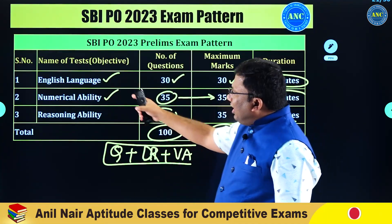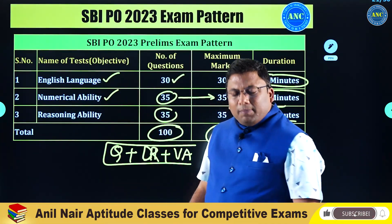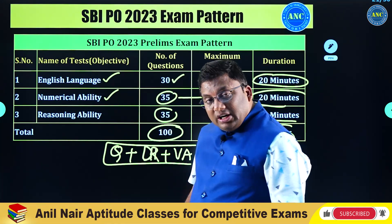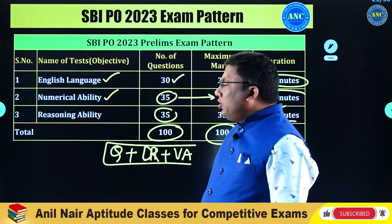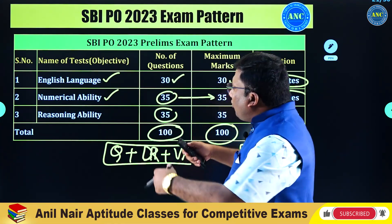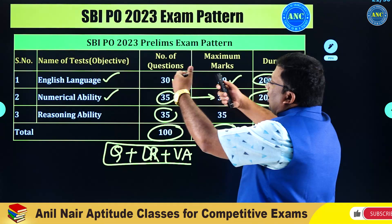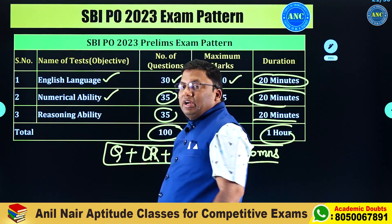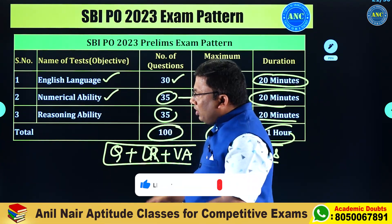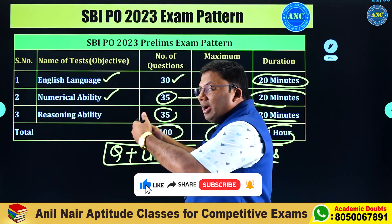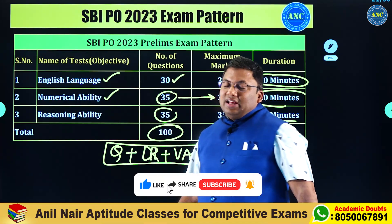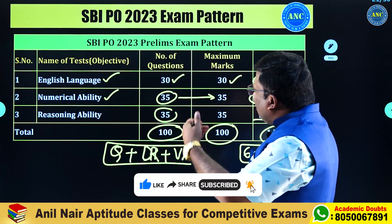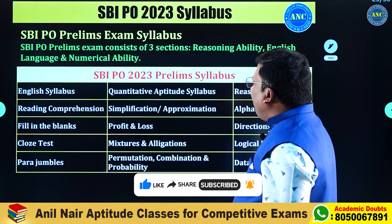In the tree diagram, the first level has verbal ability, quantitative aptitude, and reasoning ability. Let us discuss what topics will come under verbal ability, quantitative aptitude, and reasoning respectively. Let us get into the second level of the tree.